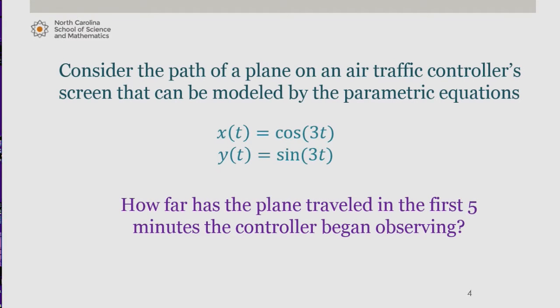Let's return now to our original question. Consider the path of a plane on an air traffic controller screen that can be modeled by the parametric equations, x of t being cosine of 3t, y of t being sine of 3t. How far has the plane traveled in the first five minutes the controller began observing?